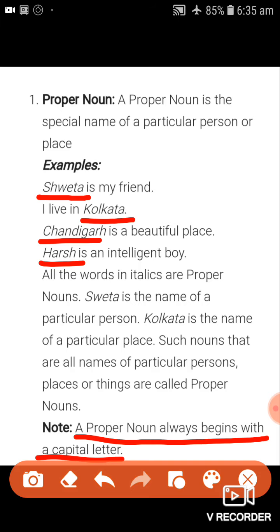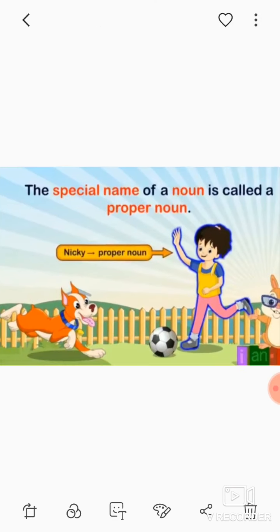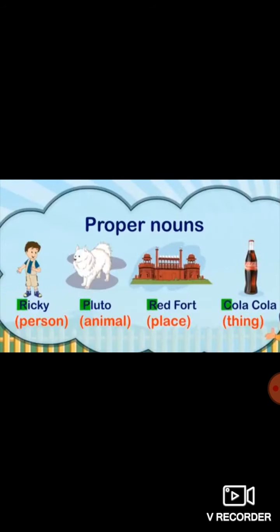Let me show you a picture. The special name of a noun is called a proper noun. Look at this girl — she has been given a special name, Nikki. So the special name of a noun is called a proper noun. Nikki is a special name given to a girl, so it is called a proper noun. A noun is the name of a person, animal, place, or thing.